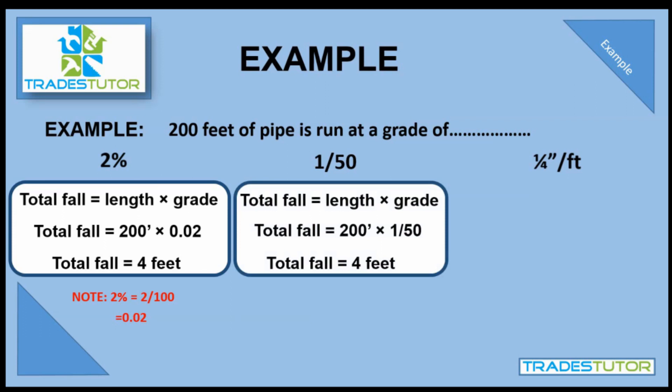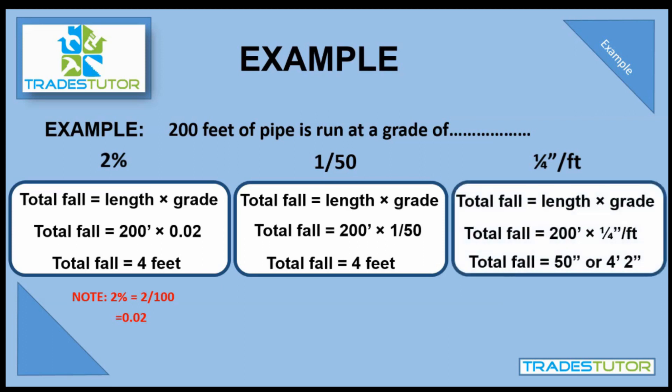Now the third version might be the one that's a little more tricky, and the reason is if you check out the length is in 200 as in feet, the fall is in inches. Whenever you have a scenario like this when the grade is in inches per foot, the fall is in inches. Now you can change it from 50 inches to four feet two inches, whatever works for you, but that's a key note to remember. So in the end of the day, two percent, one in 50, and a quarter inch per foot, yeah, they're all pretty much the same, pretty darn close. There you have it.